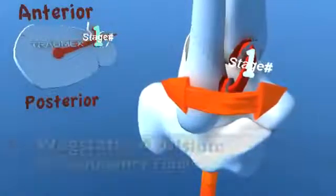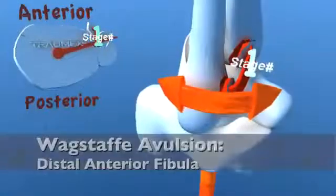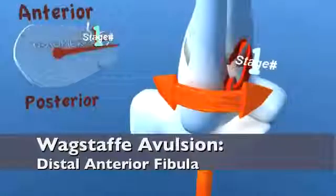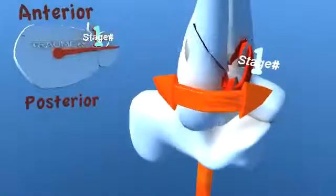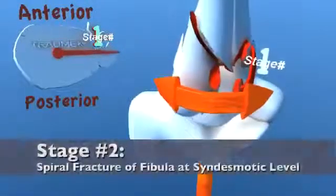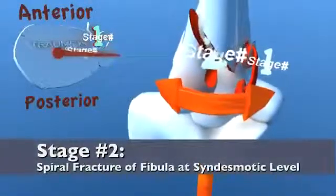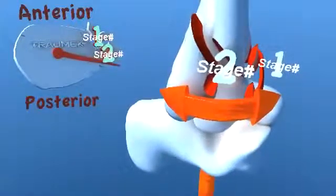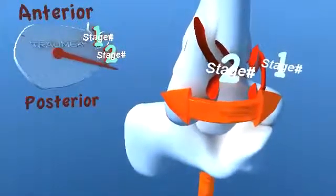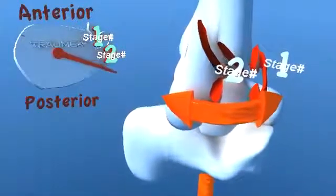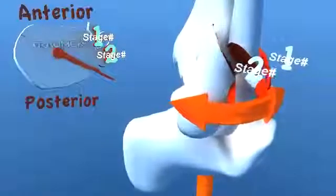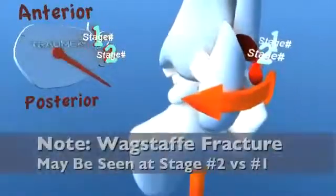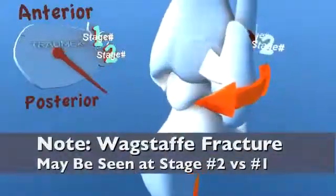As the leg continues to internally rotate, the talus collides with the distal fibula, creating a spiral fracture of the fibula beginning at the level of the syndesmosis. This describes a stage 2 injury, which is the most commonly encountered ankle fracture. A Maisonneuve fracture can also occur during this stage.